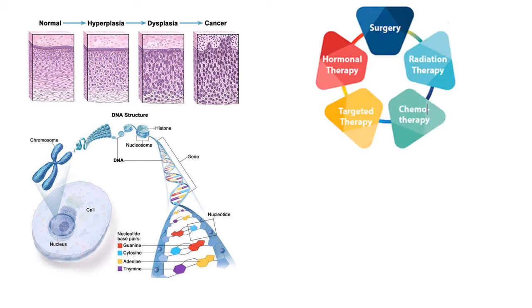Basically, cancer is a genetic disease that is the uncontrolled growth of abnormal cells anywhere in the body. These genetic changes that cause cancer can be inherited from our parents, or they can also arise during a person's lifetime as a result of errors that occur as a cell divides, or damage to DNA by certain environmental exposures.